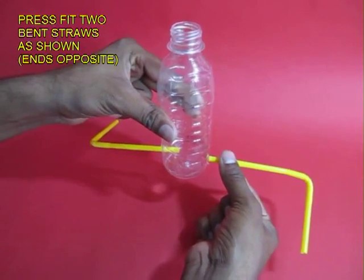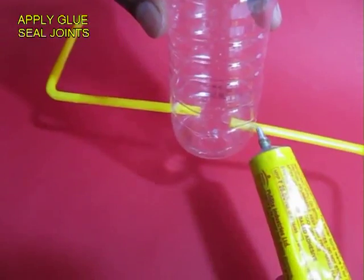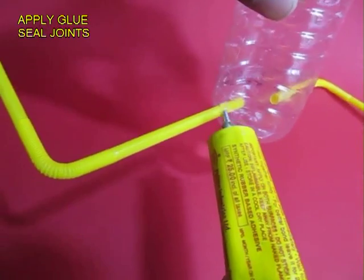Make two holes on opposite ends of a plastic bottle and insert two bent plastic straws. Now apply glue on the joints so that water does not leak.